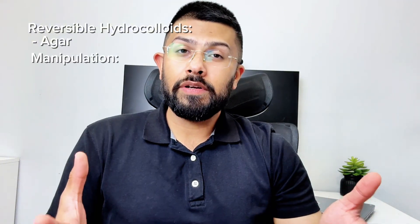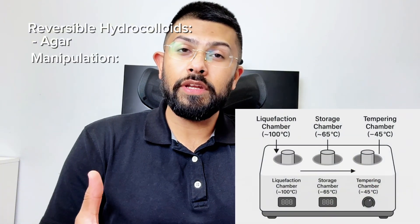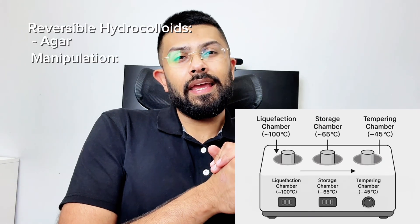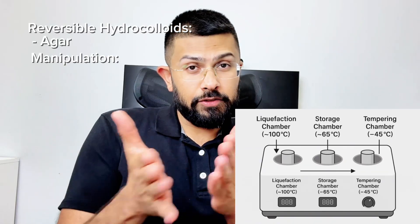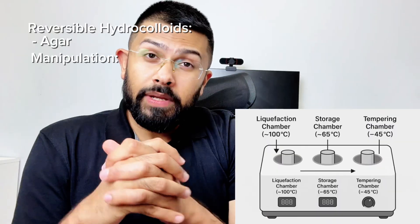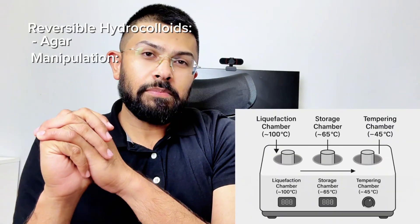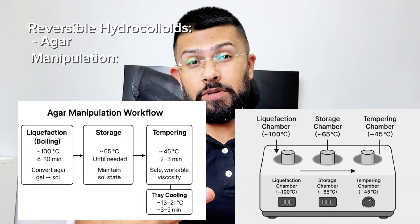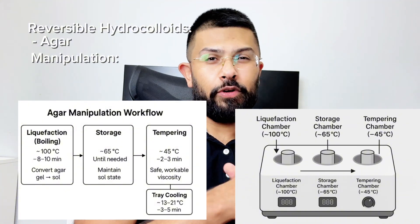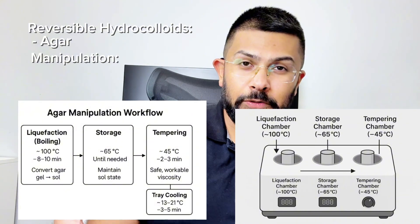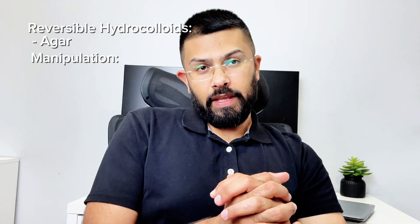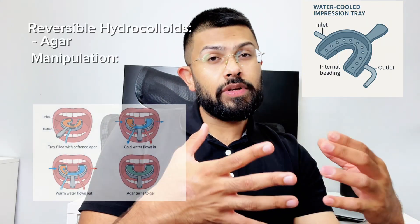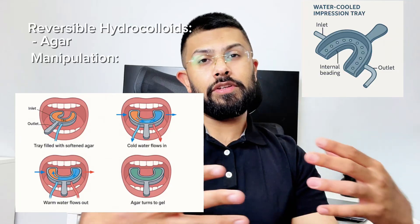The manipulation of agar requires a special three-chamber conditioning unit. The liquefying chamber is around 100 degrees and converts gel into sol. The storage chamber is around 60 to 70 degrees and maintains the material in sol state until use. The tempering chamber is around 45 to 50 degrees and brings the material to a comfortable temperature for intraoral use. Agar is loaded into special water-cooled electrical trays, and once seated in the mouth the tray circulates cold water to set the material into a gel.